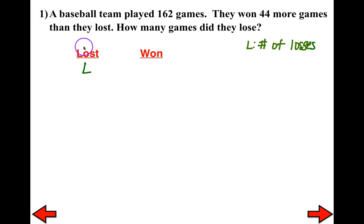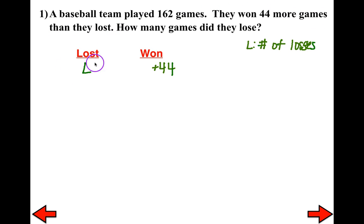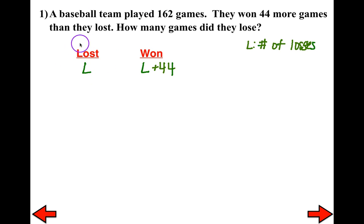L represents the number of losses. They won 44 more games than they lost — 'more than' is a switch word, and it tells me we're adding 44. I'm adding 44 to the games they lost, and L already represents losses, so wins = L + 44. We know the team played 162 games total, so: L + (L + 44) = 162.